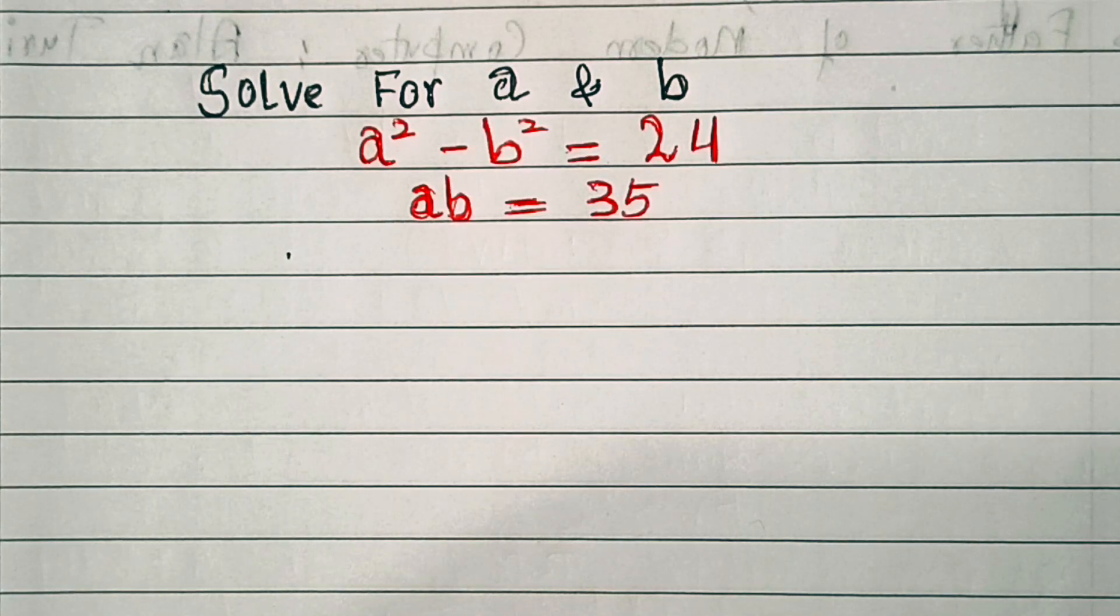Hello everyone. In this video we have a² - b² = 24 and ab = 35, so we'll find the value of a and b. You must have seen many problems like this. There are many ways to solve such problems, but here I will show you the most efficient way to deal with such problems.